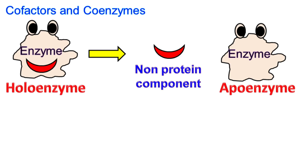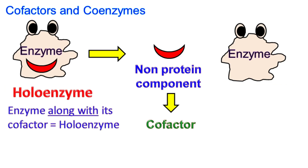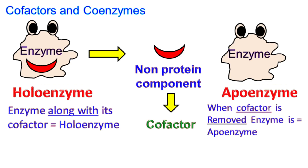An enzyme along with its cofactor is called a holoenzyme. If such an enzyme loses its cofactor, then it's called an apoenzyme. Apoenzyme is usually inactive and requires the cofactor for its function.